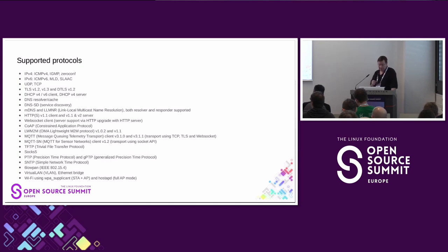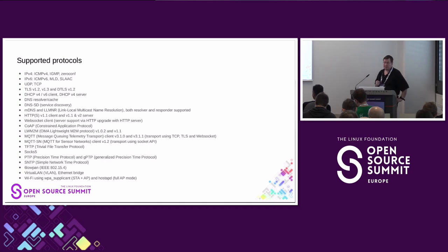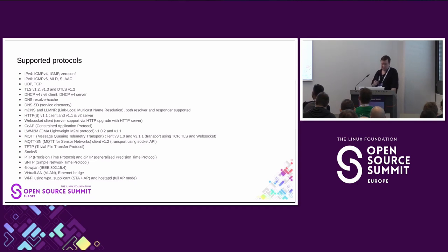For file transfer, TFTP is there, and for passing proxy networks, SOCKS5 support is implemented. For time synchronization, there is PTP support — there's actually a lightning talk in an hour about PTP. There's also the gPTP protocol, which has been supported for a long time. These are used mainly in Ethernet networks and provide microsecond-level accuracy. If you don't need that kind of accuracy, there is the Simple Network Time Protocol, which provides tens of milliseconds of accuracy.